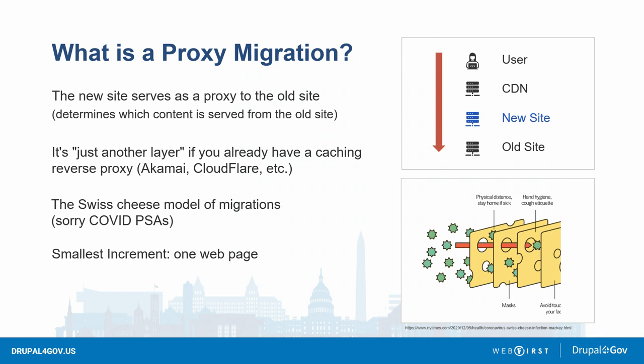This is the Swiss cheese model of migrations. The HTTP requests are like virus particles — they go through the caching layers, and if the content isn't there they go through the new site and hit the old site, and the old site serves up the content. That means our smallest migration increment is a single web page or single HTTP request.